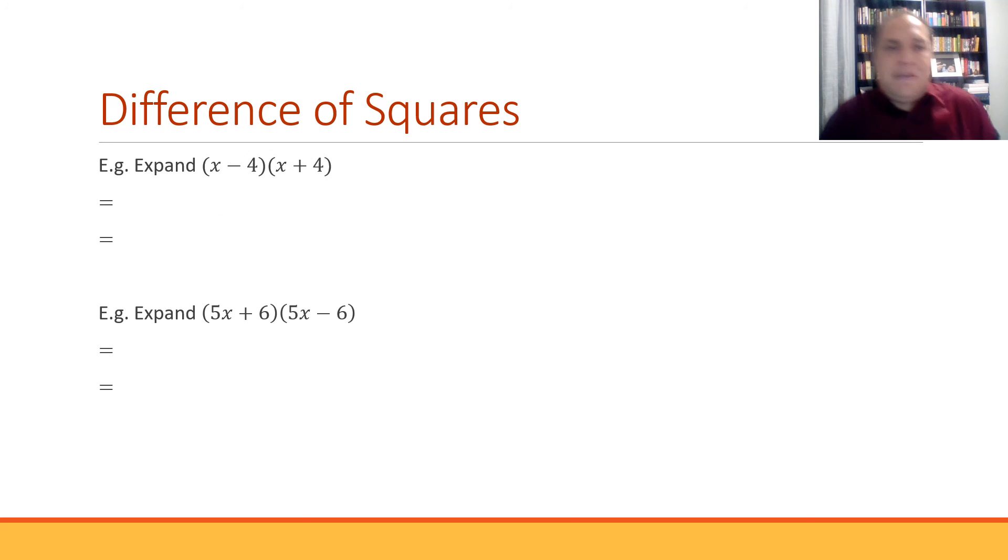Let's use this in some examples. We've got x minus 4, x plus 4. So according to our rule, we can just square the first term, subtract and square the second term. So that's x squared minus 16. And there's your working out, there's your expansion of this term.